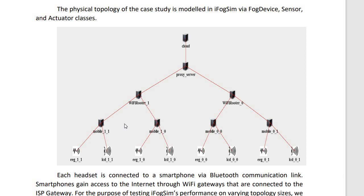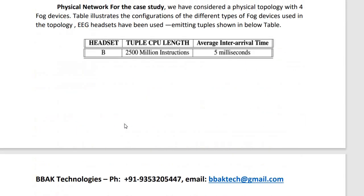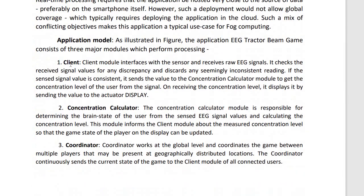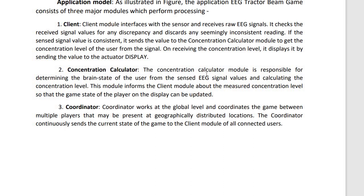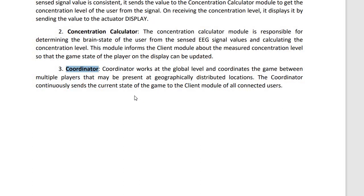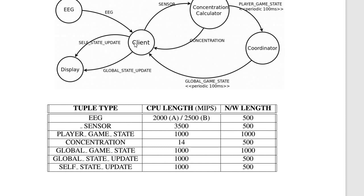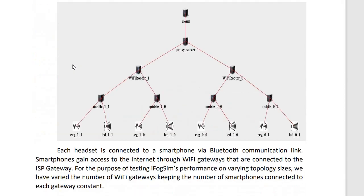The client's responsibility is to clean the input. The concentration calculator receives the output of the client — the cleaned sensor information — and computes the intensity of the concentration of the player. It then sends the result back to the client, as well as to the coordinator. The coordinator collects the concentration of every user, displays all users' data back to the client, and the client displays it on the screen.